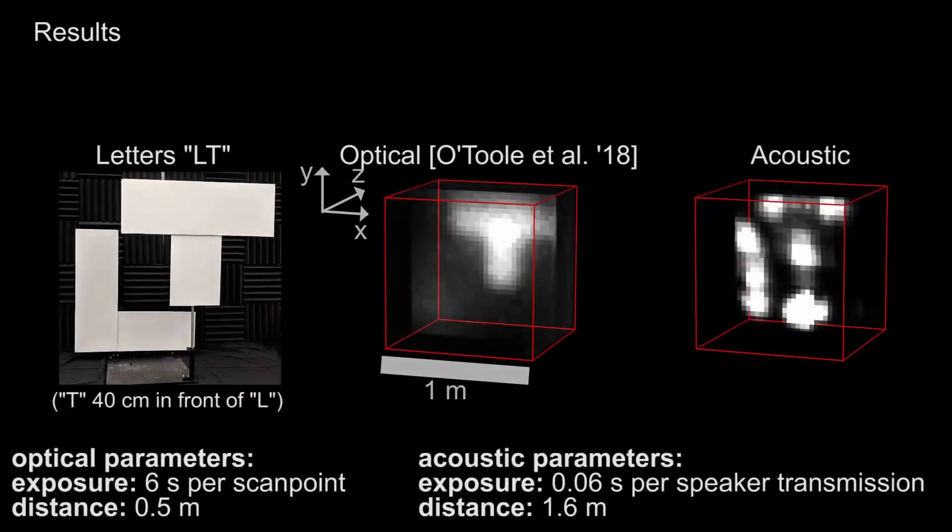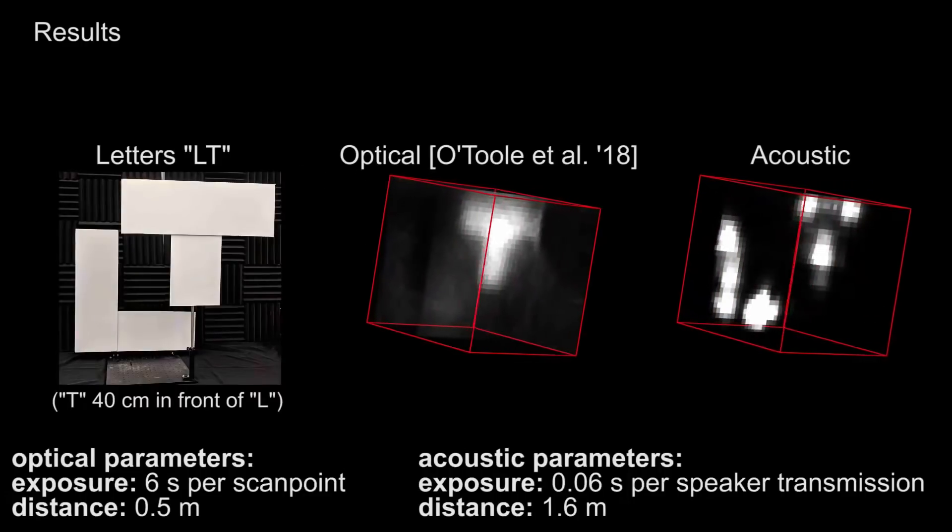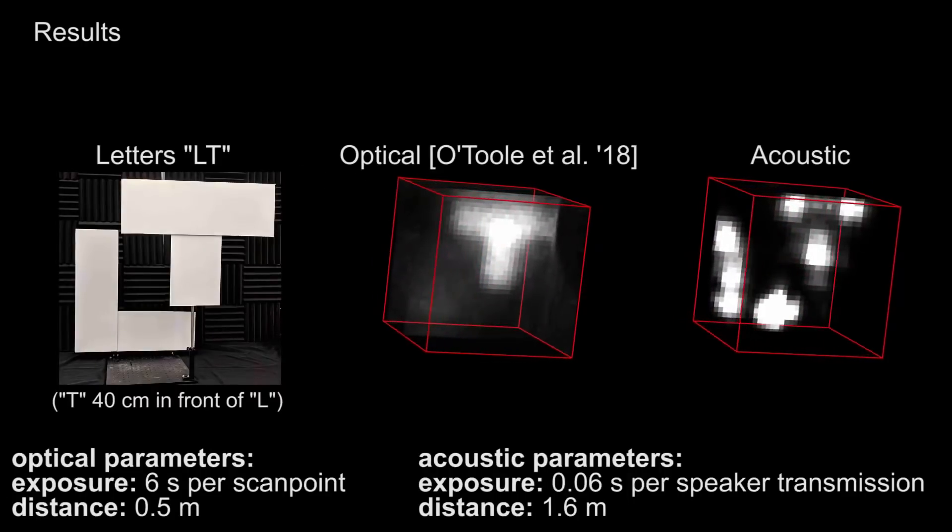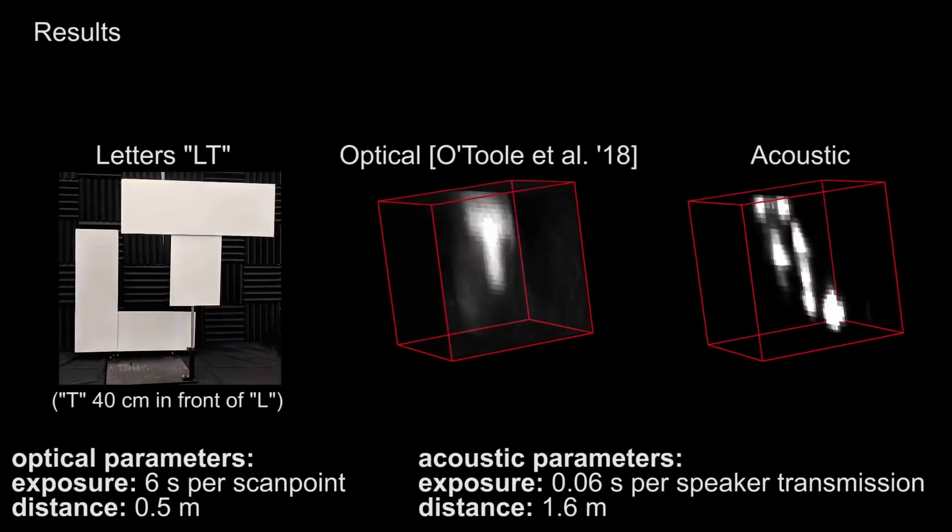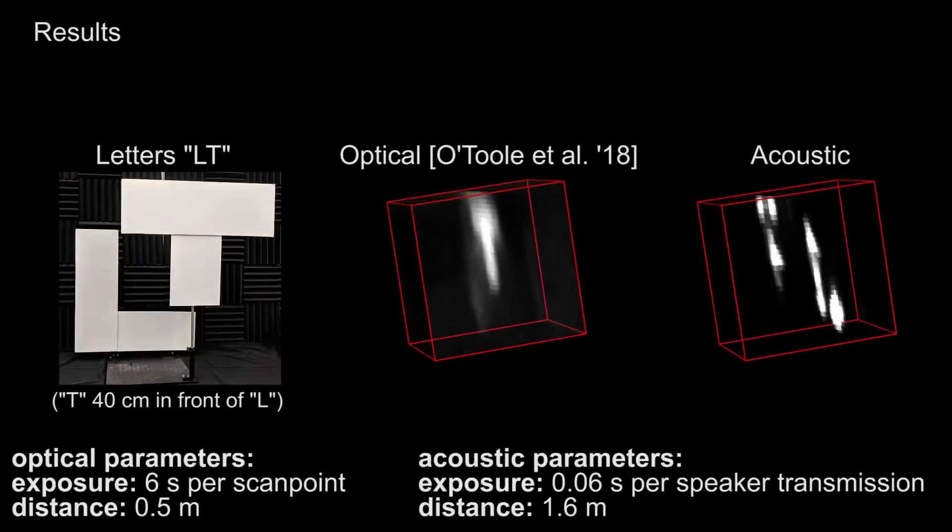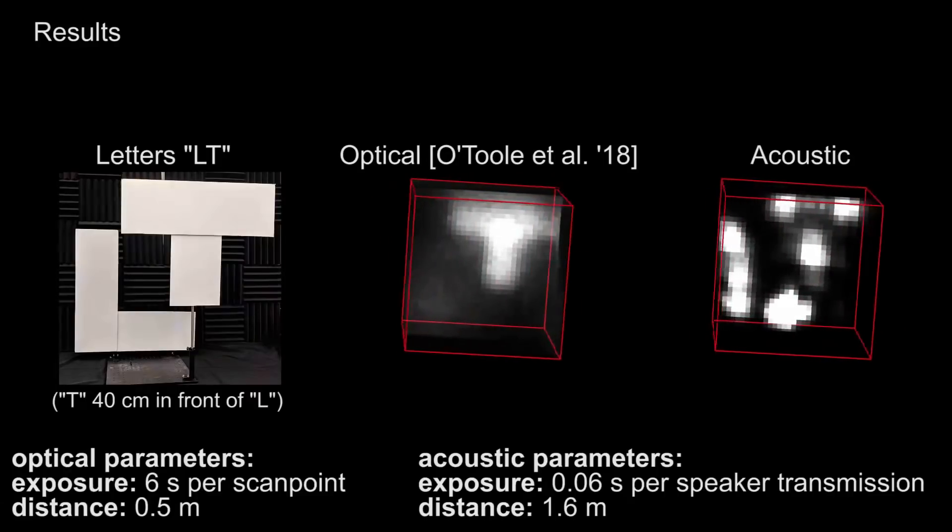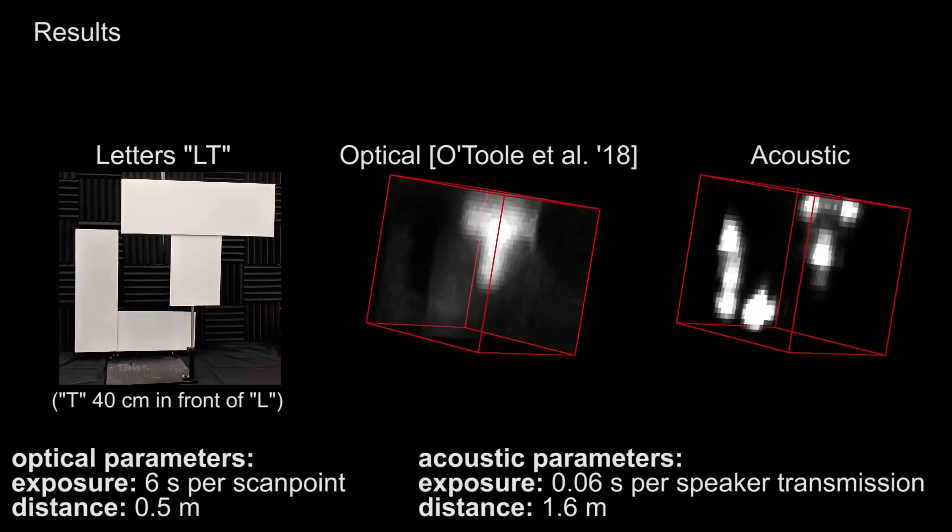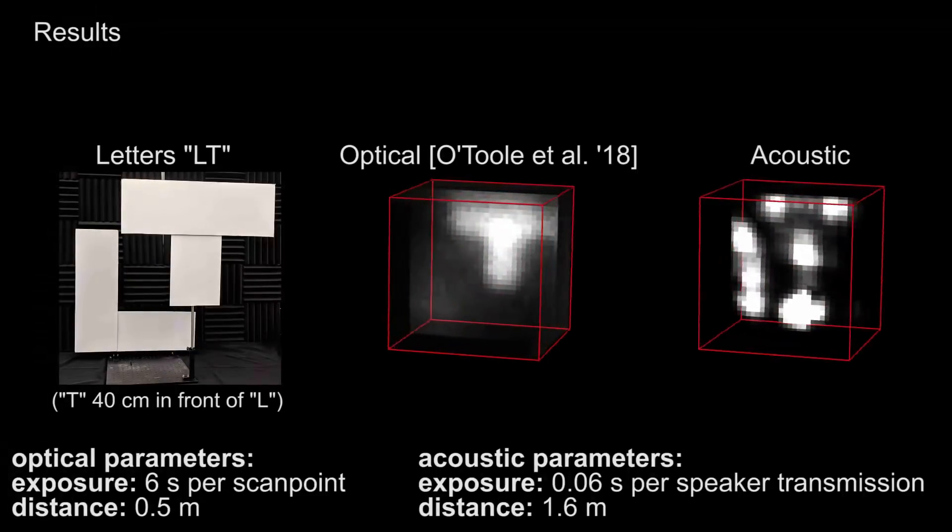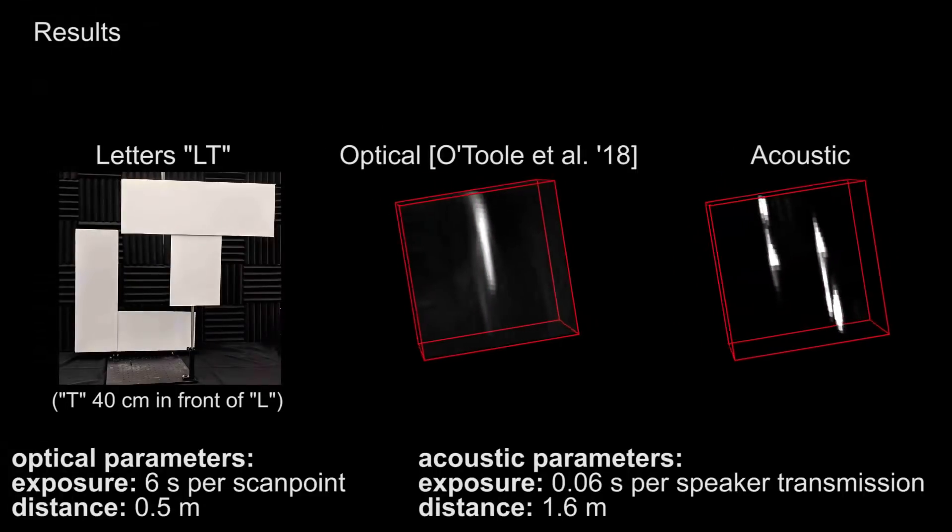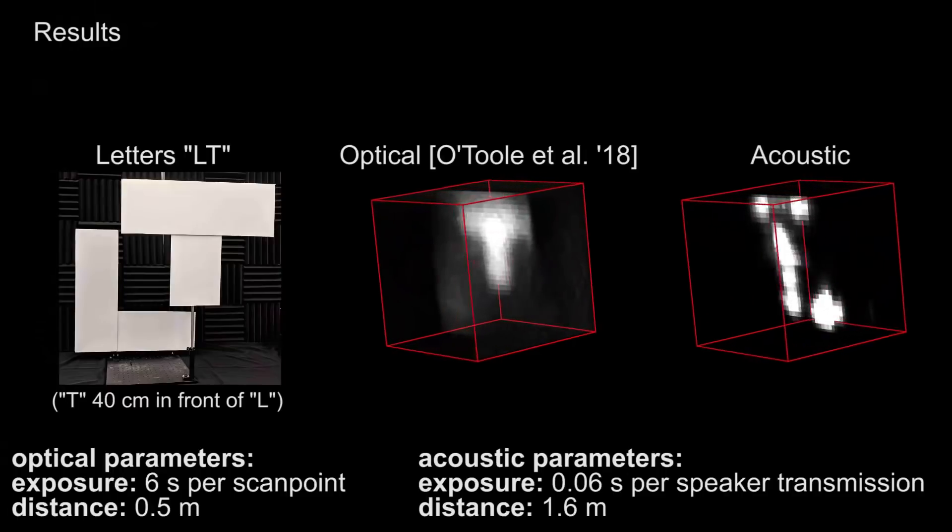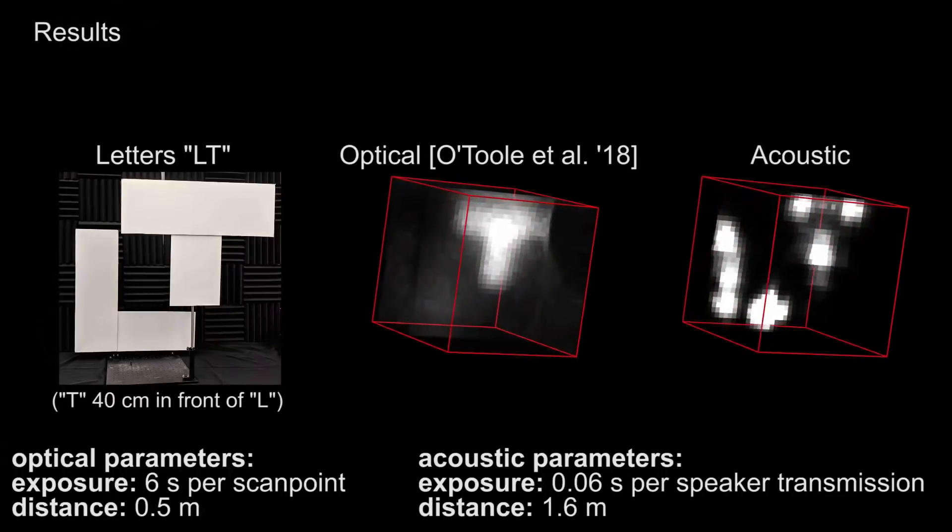Finally, we compare the acoustic reconstruction with optical methods. In this scene, we place two cut-out letters around the corner and scan them using our acoustic technique. We also compare to state-of-the-art optical scanning and reconstruction methods. Since the optical signal decays much more quickly with increasing distance, it is difficult to make out the more distant L letter located roughly a meter away from the wall, though the T shape can be seen at 50 centimeters distance.